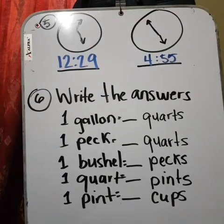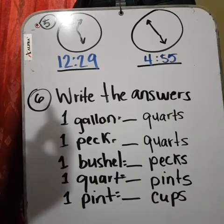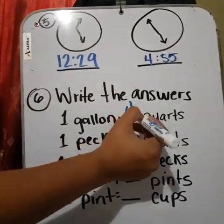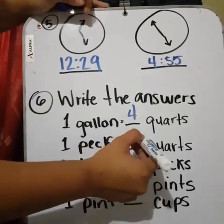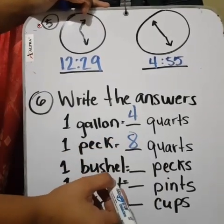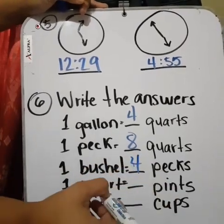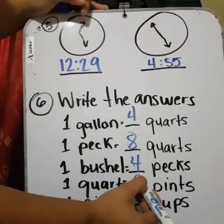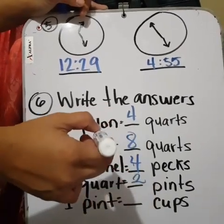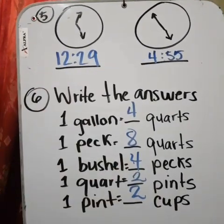Exercise 6. Write the answer. Todavía seguimos en la página 140. 1 gallon equals how many quarts? 4 quarts. 1 peck equals 8 quarts. 1 bushel. How many pecks make 1 bushel? 4 peck. 1 quarts. How many pints do you need to make 1 quart? 2. How many cups do you need to make 1 pint? 2 cups. Very good.